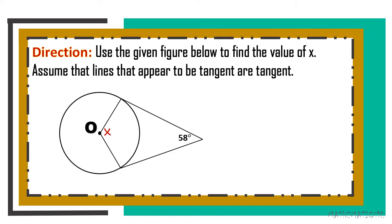Use the given figure below to find the value of X. We have a 58-degree angle and angle X that we need to find. Observing the illustration, we have a tangent segment, and applying theorem 101, if we draw a radius going to the point of tangency, we can form a perpendicular line — meaning a right angle measuring exactly 90 degrees. We also have another tangent segment, giving us another right angle.